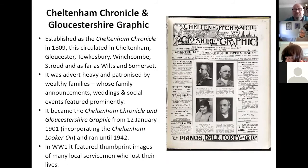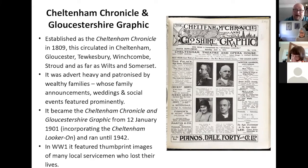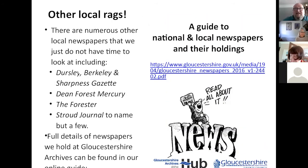Much more user-friendly is the Cheltenham Chronicle and Gloucestershire Graphic. These are in the search room, all bound into nice blue folders. They were advert-heavy but patronised by very wealthy families — you get family announcements, weddings, and the social events of the great and the good. One of the best things about these is that during World War I, they actually started publishing thumbnail images of the soldiers, sailors and airmen who'd lost their lives, so they are very useful in family history research. There are lots of other newspapers — the Dursley, Berkshire and Sharpness Gazette, the Dean Forest Mercury, The Forrester, and the Stroud Journal, among others.